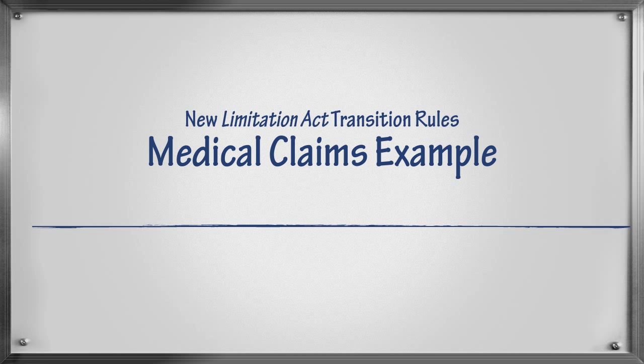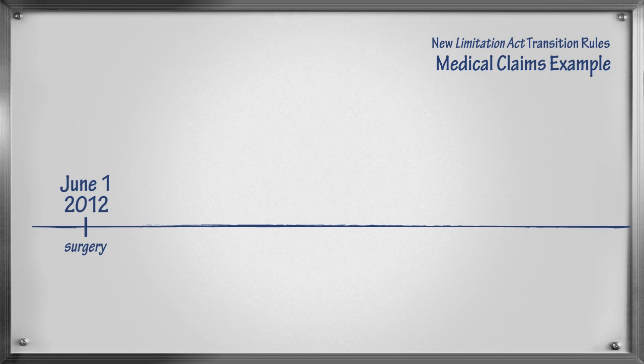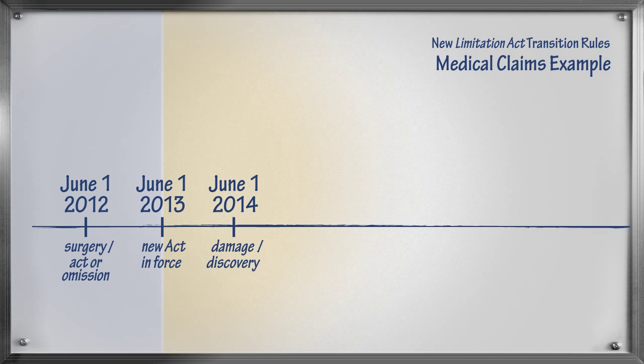Here is an example to illustrate how the transition rules work for medical claims where the former ultimate limitation period was 6 years. Mary had surgery on her stomach on June 1, 2012. However, it is not until June 1, 2014 that she becomes very sick and discovers that a sponge was left inside her stomach during the surgery. Let's assume that the date of damage is the date that Mary gets very sick. The act or omission date is the date of Mary's surgery, which occurred under the former act on June 1, 2012. Discovery occurred on June 1, 2014 under the new act. So the transition rules apply.